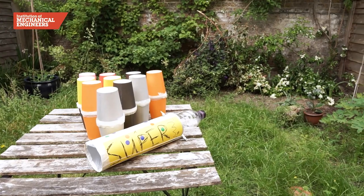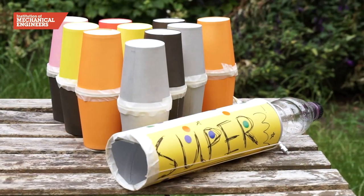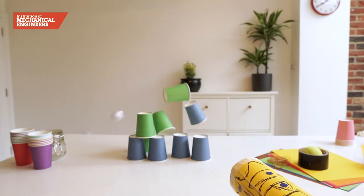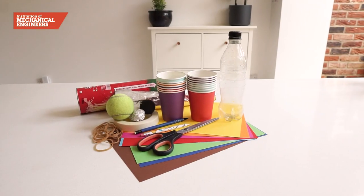We're going to make a launcher that can fire corks and other projectiles. We can then use this launcher to create a new game similar to 10-pin bowling, using materials that can be found around the house.